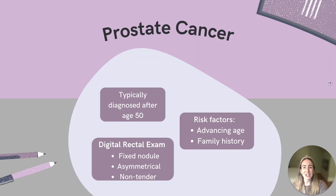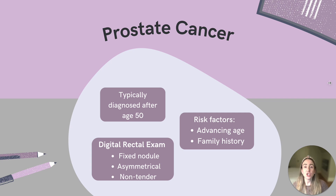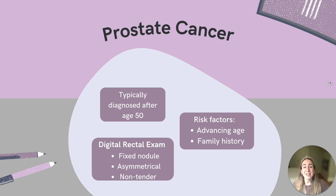Moving on to prostate cancer. Prostate cancer is one of the most common types of cancer among men and it can range in severity. It is typically diagnosed after age 50. In addition to advancing age, a family history of prostate cancer is a major risk factor. The digital rectal exam would reveal a painless, fixed nodule or asymmetry of the gland, and an official diagnosis is made by a prostate biopsy. We would want to refer to urology for an elevated prostate-specific antigen or an irregular digital rectal exam, which may be indicative of this condition.